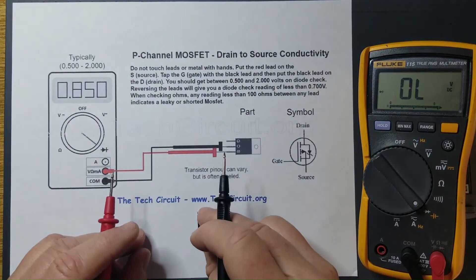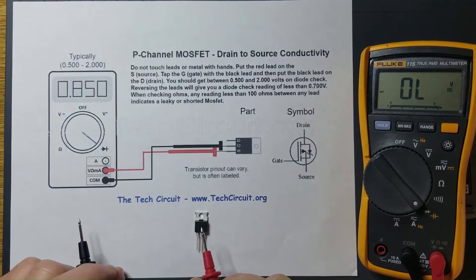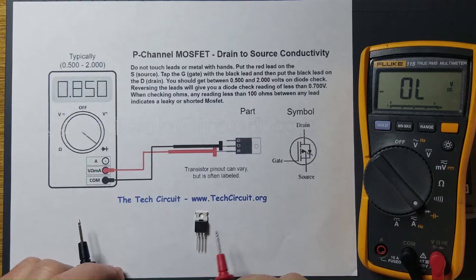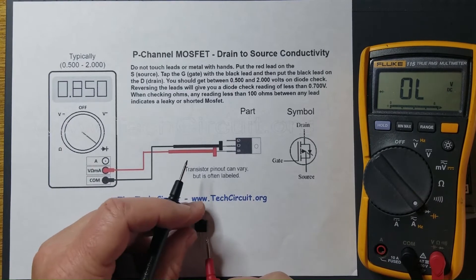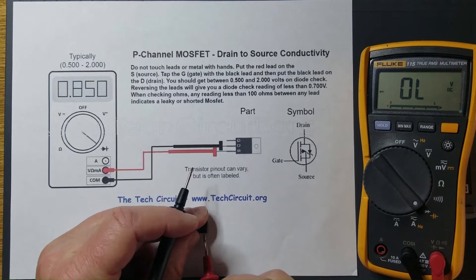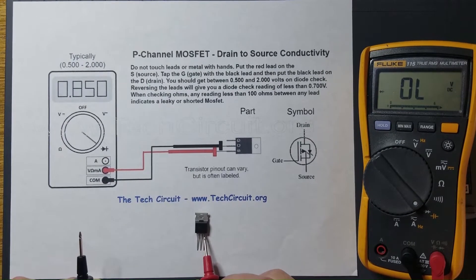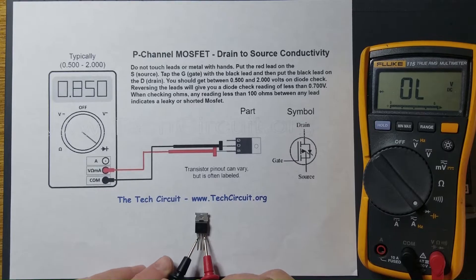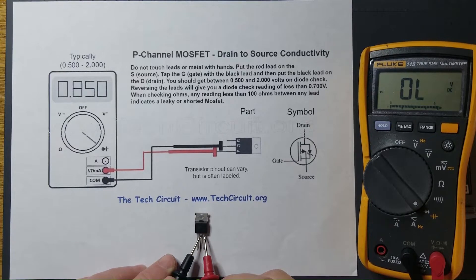On a P-channel MOSFET, you will put the red lead on the source, which is the one on the right, and then you'll put the black lead on the drain, which is the center one. You notice I have no reading there.